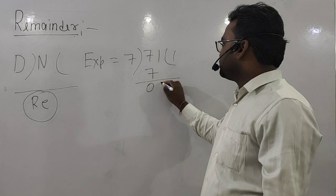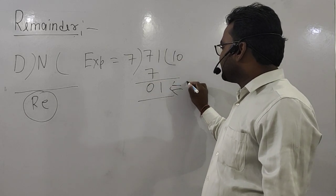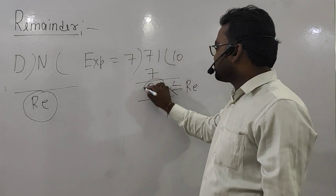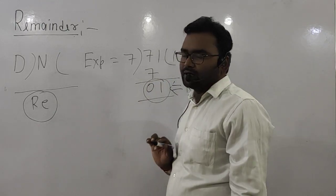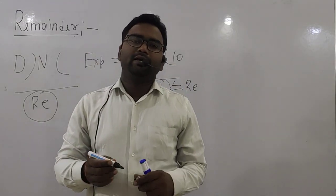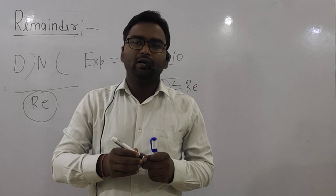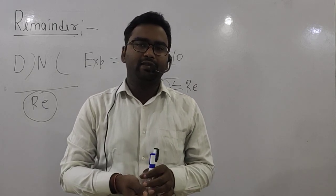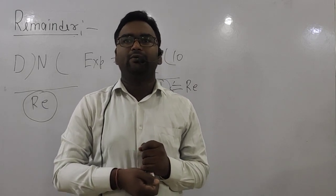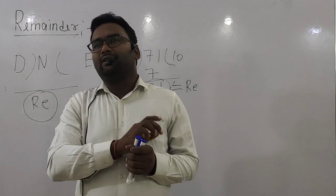The result is 0 remainder 1 — that means in this case, the remainder R is 1. So the important point is: if we divide any number and it is not completely divisible, then what is left over is the remainder.